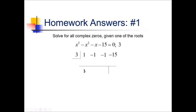So we got that 1 coming down, times 3 gives me 3, plus negative 1 gives me 2, 3 times 2 gives me 6 up here, plus negative 1 is 5, times 3 is 15, plus negative 15 is 0. So, I can factor this polynomial into x minus 3, times my quotient of x squared, plus 2x, plus 5.